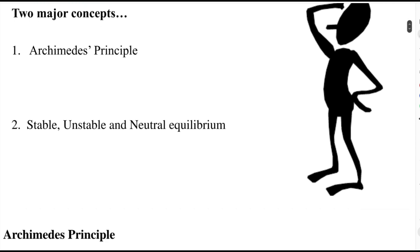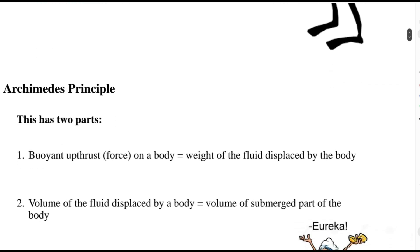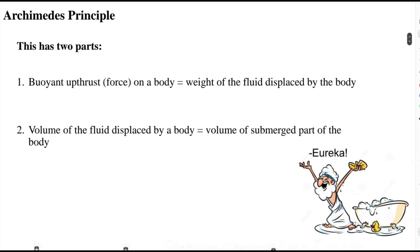The first one is the Archimedes principle, which has two parts. First, when a body is immersed in a fluid, the buoyant upthrust or buoyant upforce on the body is equal to the weight of the fluid displaced by the body. The second part is that the volume of the fluid displaced by a body is equal to the volume of the submerged part of the body.